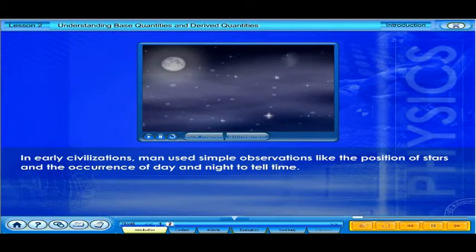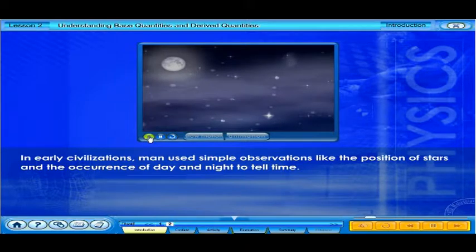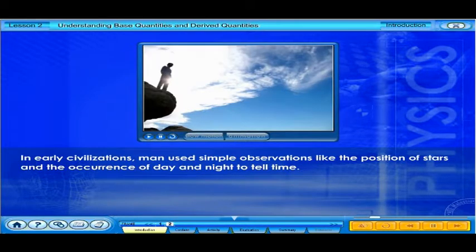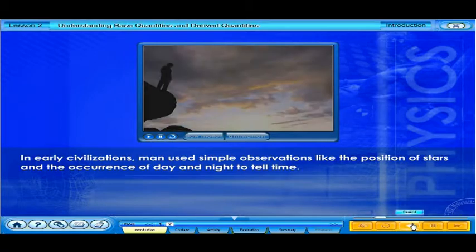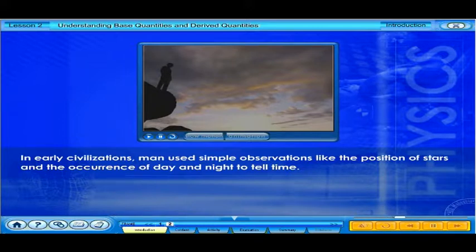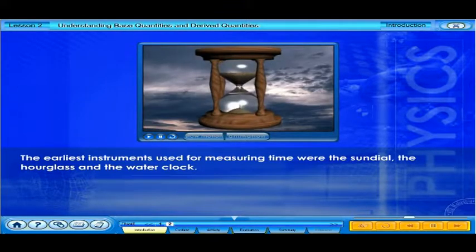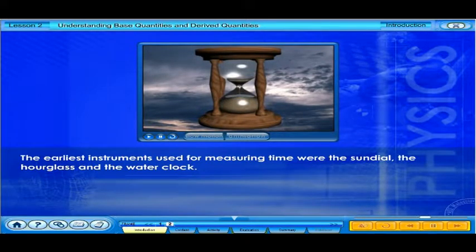In early civilizations, man used simple observations like the position of stars and the occurrence of day and night to tell time. However, as they became more sophisticated, these methods were found to be inaccurate. Instruments that could measure the passing of time were created. The earliest instruments used for measuring time were the sundial, the hourglass, and the water clock.